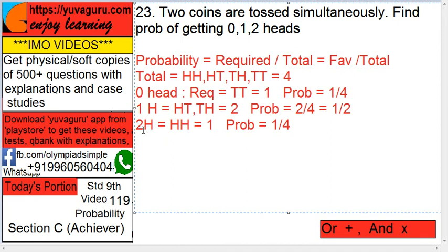Two heads means only HH is possible. So outcome one, probability equals to one by four.